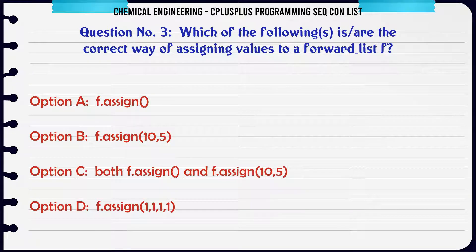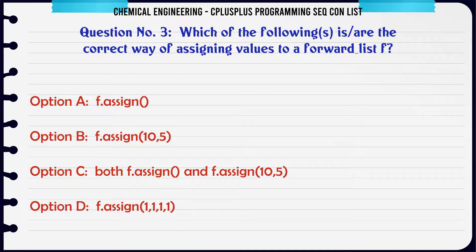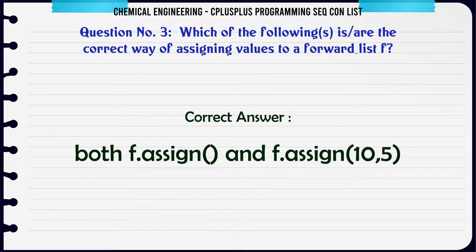Which of the following is/are the correct way of assigning values to a forward list F? A. F.assign(1,2,3,4,5). B. F.assign(10,5). C. Both F.assign(1,2,3,4,5) and F.assign(10,5). D. F.assign(1,1,1,1). The correct answer is: Both F.assign(1,2,3,4,5) and F.assign(10,5).